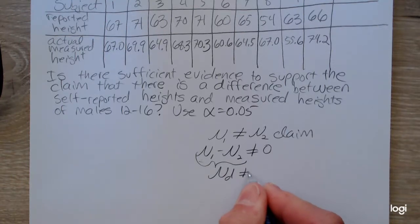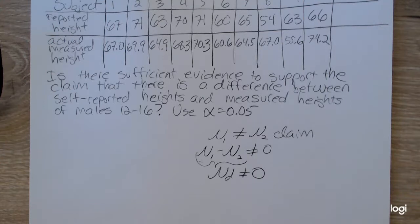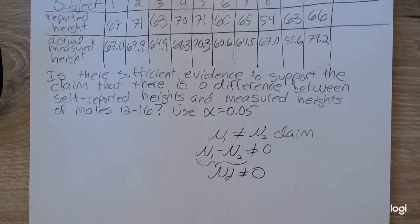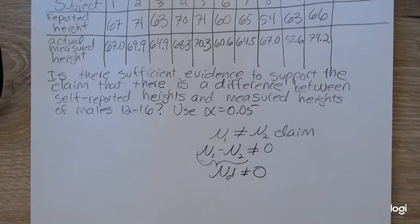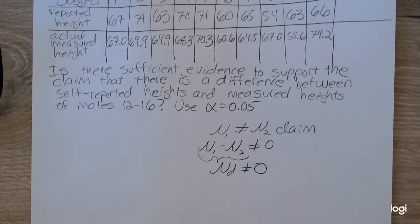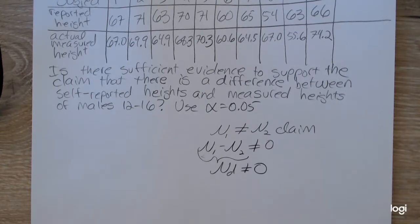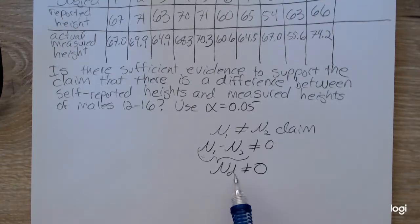We don't do this for the independent case because we don't necessarily have the same sample sizes. Also, the paired t-test, because we have dependent samples, we want to preserve the relationship between the samples. So we indicate that by testing the differences and noting it as mu sub d.